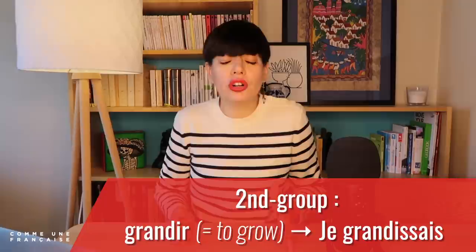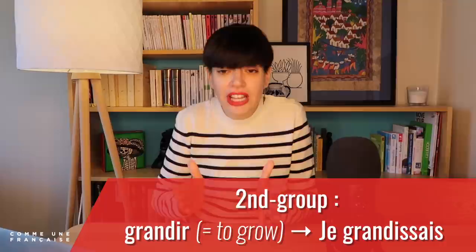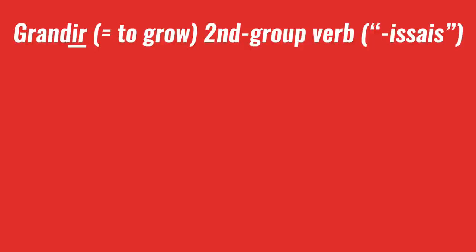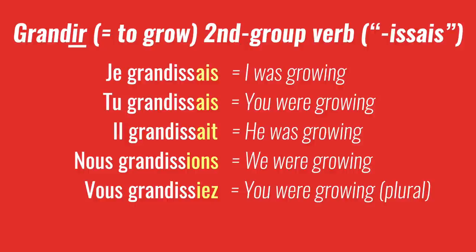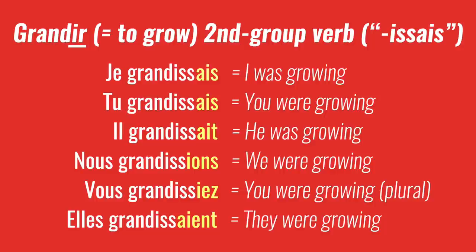There is one exception with the second-group verbs such as 'grandir,' to grow. The endings don't change but the root is tweaked a little bit. So in the first person of l'imparfait, 'grandir' becomes 'je grandissais' — I was growing. You take the root and add the ending: je grandissais, tu grandissais, il grandissait, nous grandissions, vous grandissiez, and elle grandissait. It's not that difficult when you know how it's built.